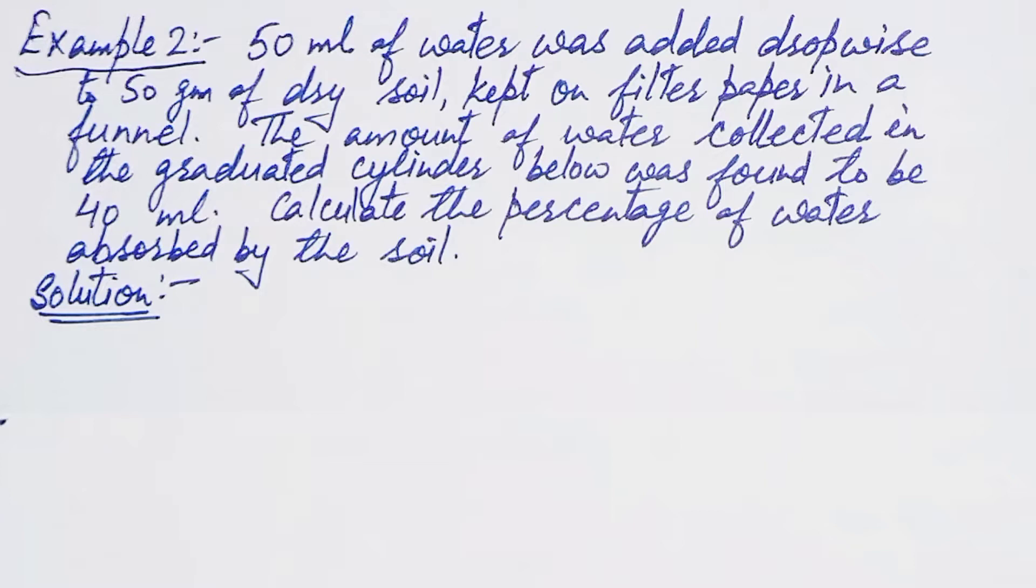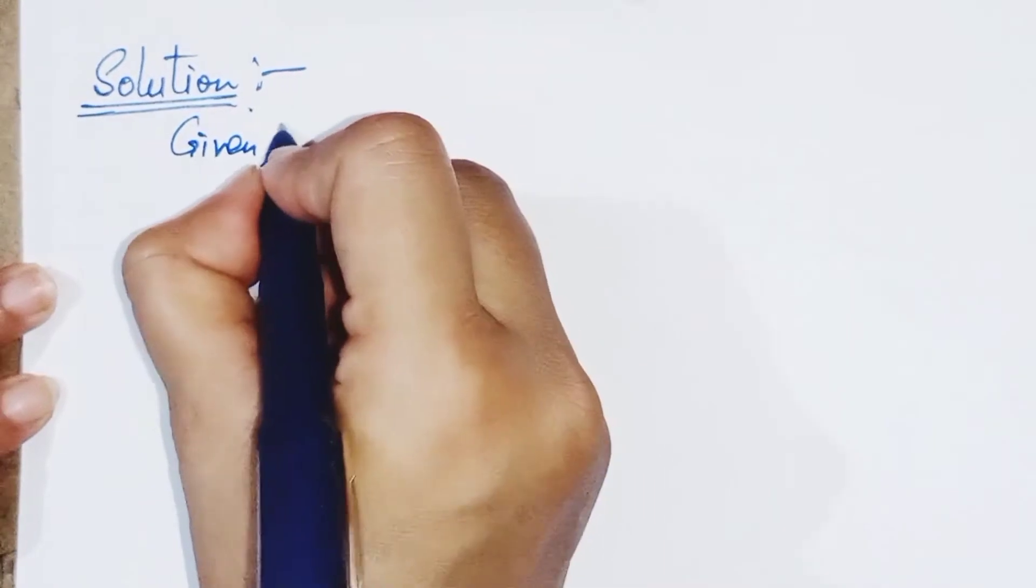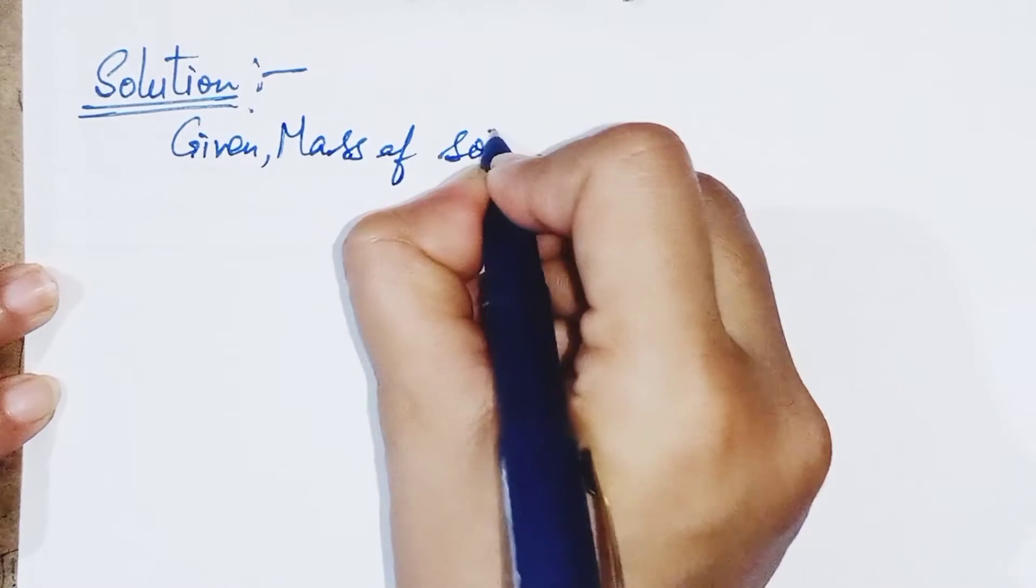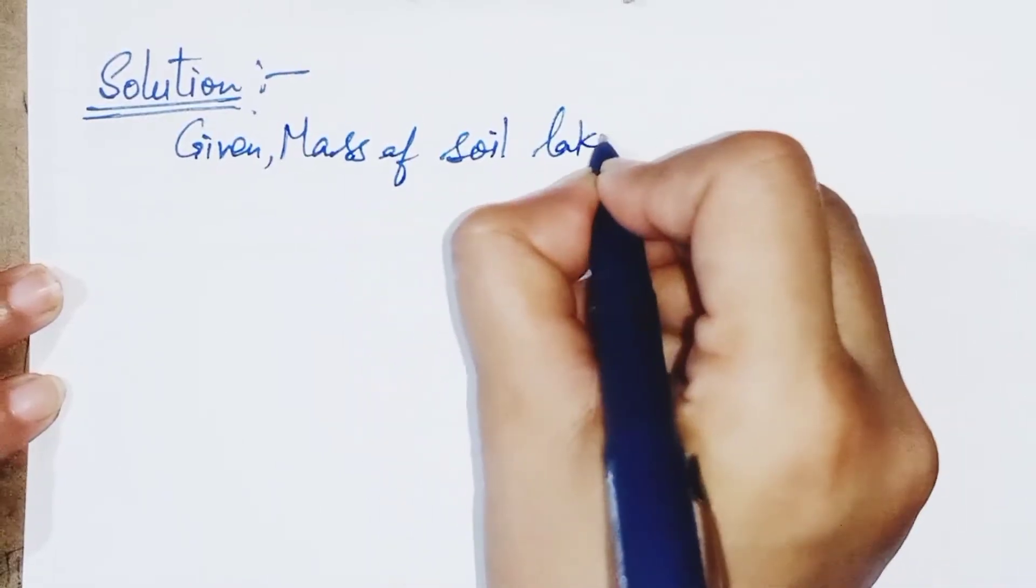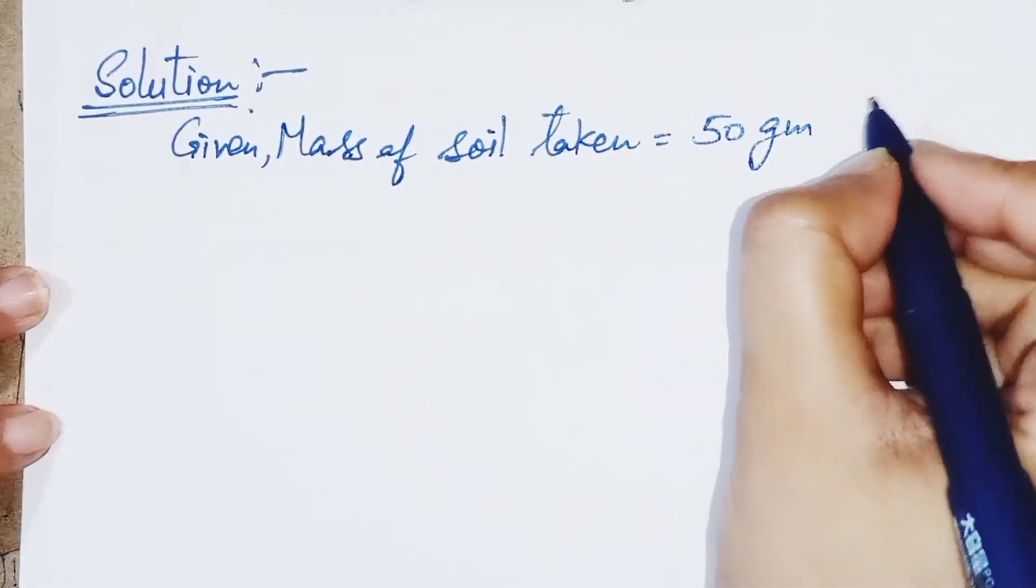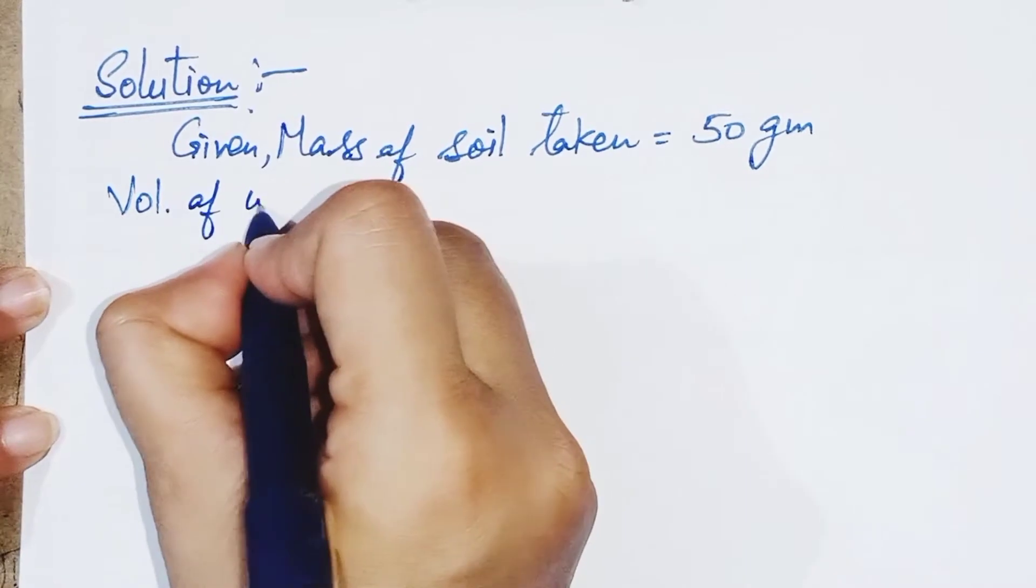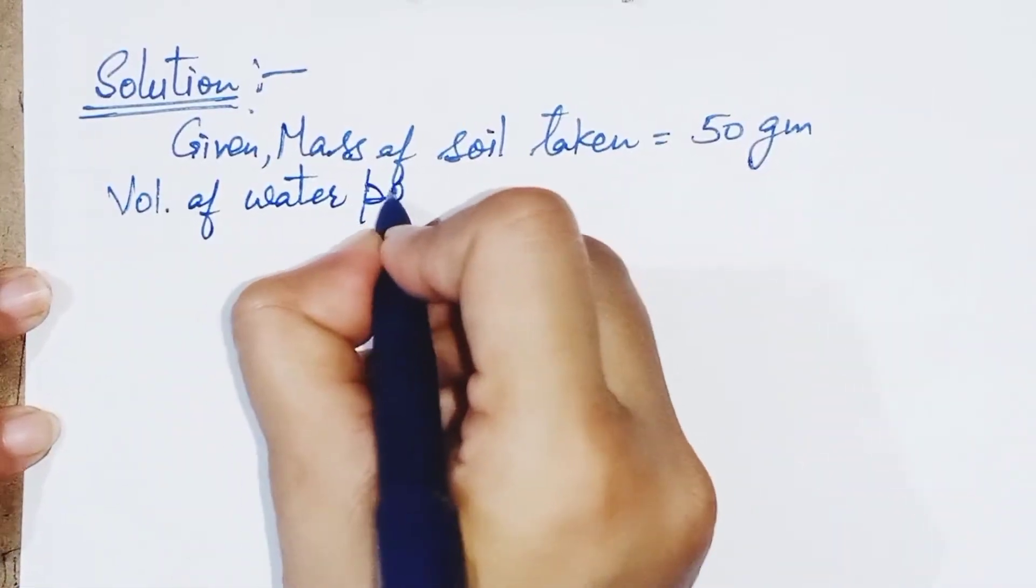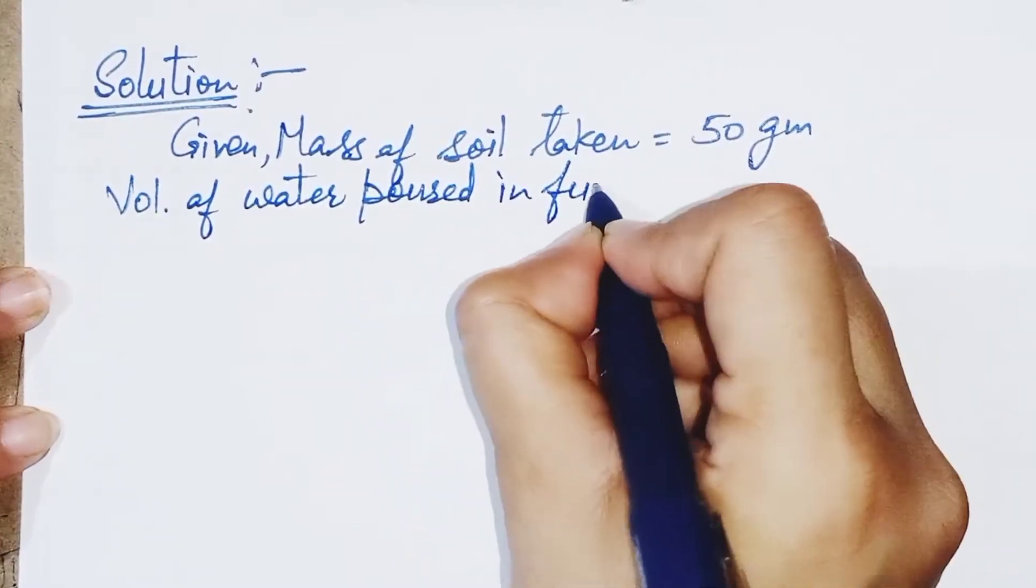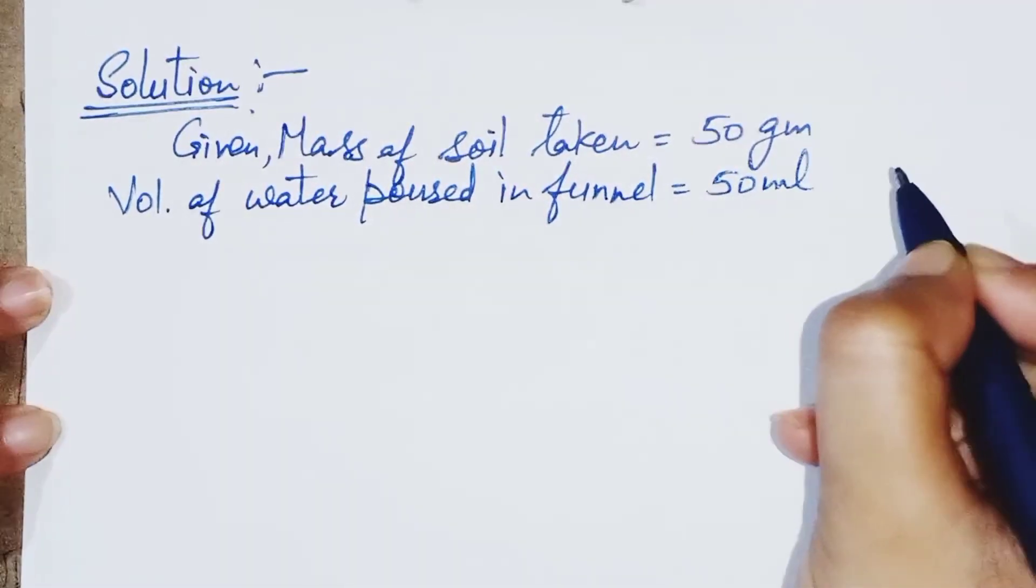So here is the solution. Given, mass of soil taken is equal to 50 gram. Volume of water poured in funnel is equal to 50 ml.